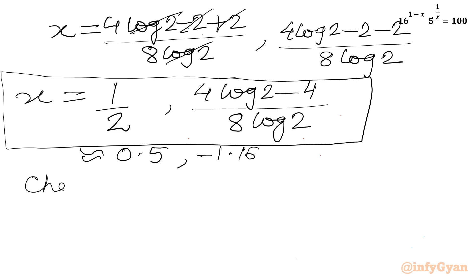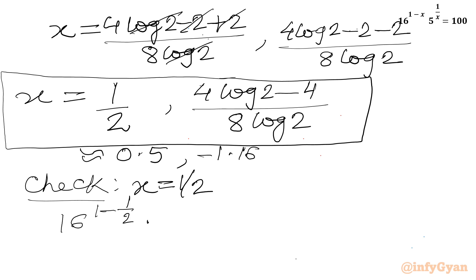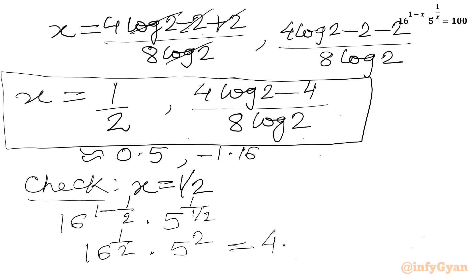If we want to check our solution, I can check x equal to half. So 16 power (1 minus half) times 5 power (1 over half): 16 power half is square root of 16, which is 4, and 5 power 2 is 25. This gives us 4 times 25 equals 100, which is our RHS. So this brings the end of the video. Do not forget to like, share and subscribe. Bye-bye till next video!